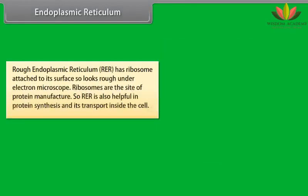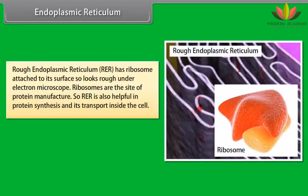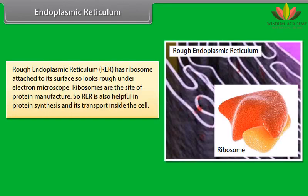Rough endoplasmic reticulum (RER) has ribosomes attached to its surface, so it looks rough under an electron microscope. Ribosomes are the site of protein manufacture, so RER is also helpful in protein synthesis and its transport inside the cell.